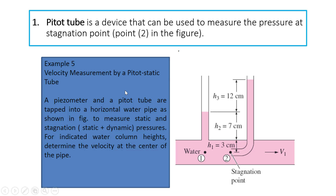Let's look at an example of a Pitot tube — how to measure velocity using the Pitot tube. Here we have a figure with a pipe. We have a pipe and then we have this kind of straight tube connected to the part — we call it a Pitot meter. Another tube that has the L-shape is the Pitot tube. So we have two tubes: one tube for the Pitot meter, and one L-shaped tube which is the Pitot tube.